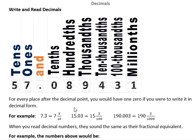For example, 7.3 would be seven and three over ten, because there's one decimal place. 15.03 would be fifteen and three over one hundred, because there are two decimal places. Finally, 190.0003 would be one hundred ninety and three over one thousand — three zeros to match the three decimal places.